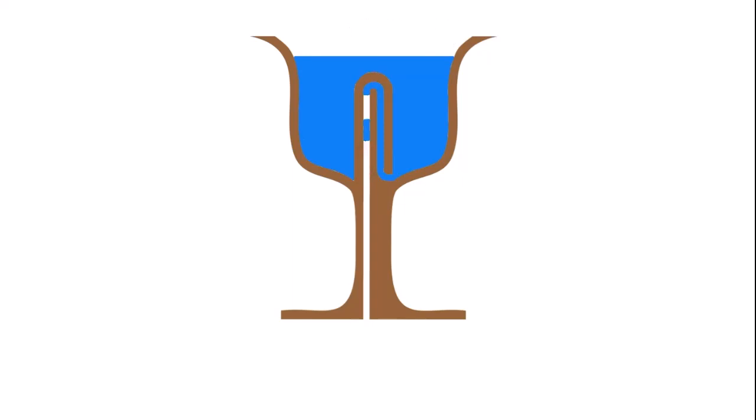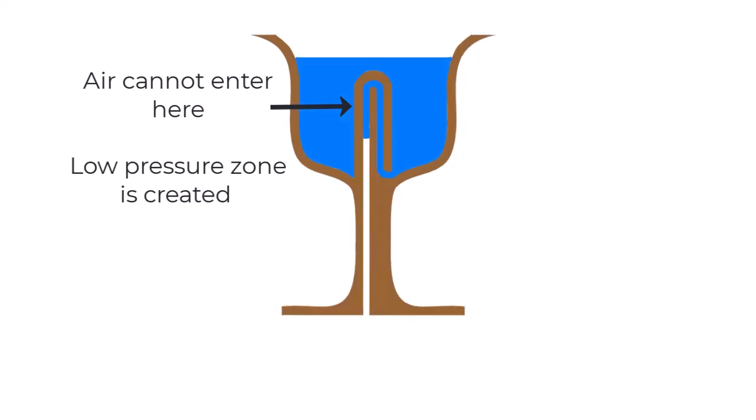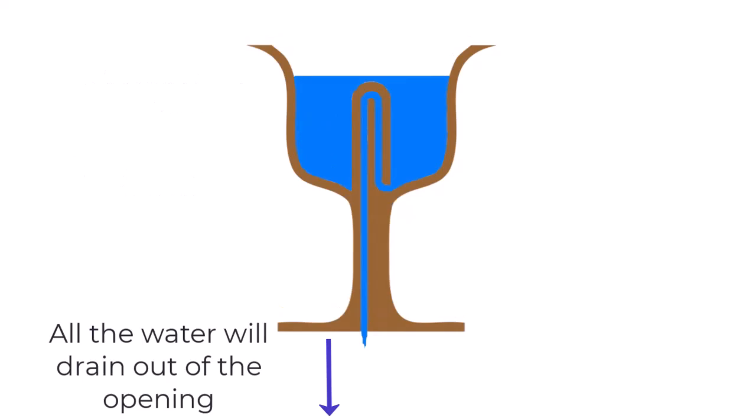Since this zone is closed by water, no air is able to enter in this gap, which creates a low pressure zone, which is less than that of atmospheric pressure. The water will then get sucked into that gap and cause all of the water to drain out.